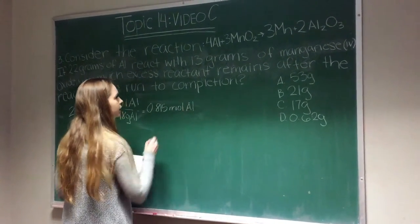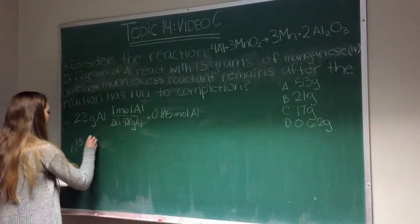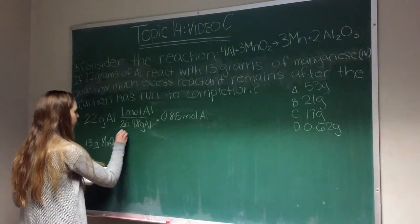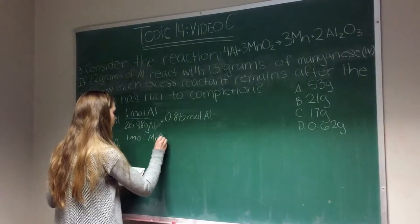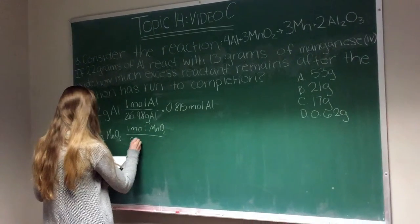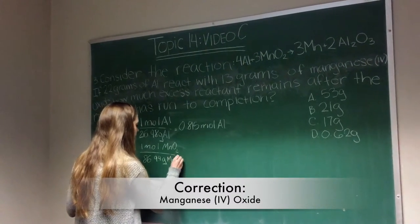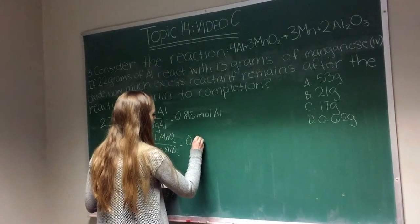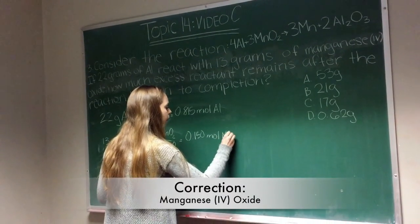Now we're going to take our second reactant: 13 grams of manganese oxide. Multiply this by 1 mole of manganese oxide, divide it by its molecular weight, which is 86.94 grams of manganese oxide. This gives us 0.150 moles of manganese oxide.